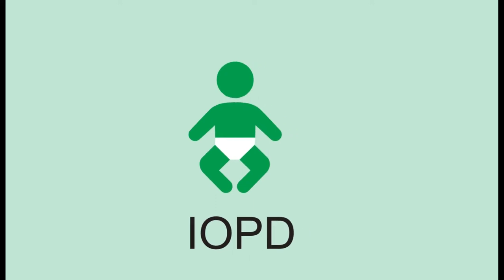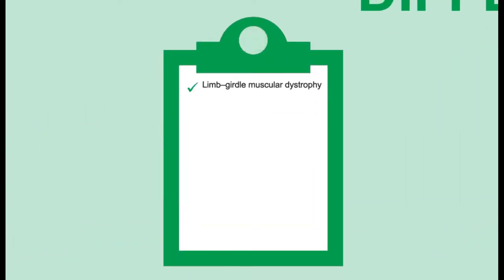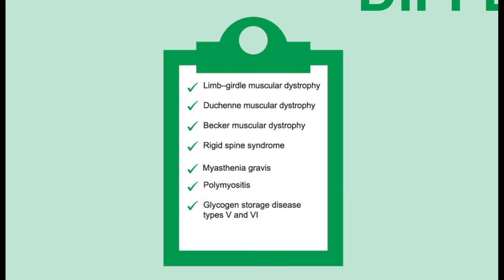For late-onset Pompe disease, the differential includes limb girdle muscular dystrophies, Duchenne and Becker muscular dystrophy, rigid spine syndrome, myasthenia gravis, polymyositis, and some glycogen storage disorders such as type 5 and type 6.